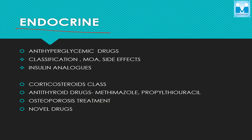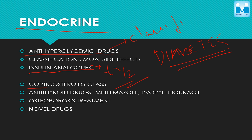Coming to endocrine — here, you mainly deal with diabetes drugs. You have to know the various anti-hyperglycemic drugs, their classification, and major side effects; that is sufficient without going into detail. Insulin analogs are another hot topic — their half-lives you have to know in detail. In corticosteroids, there are steroids with only mineralocorticoid action and steroids with both mineralocorticoid and glucocorticoid actions — be thorough with those. For anti-thyroid drugs, just read about methimazole and propylthiouracil — it's not a hot topic. For osteoporosis treatment, just have a superficial idea.